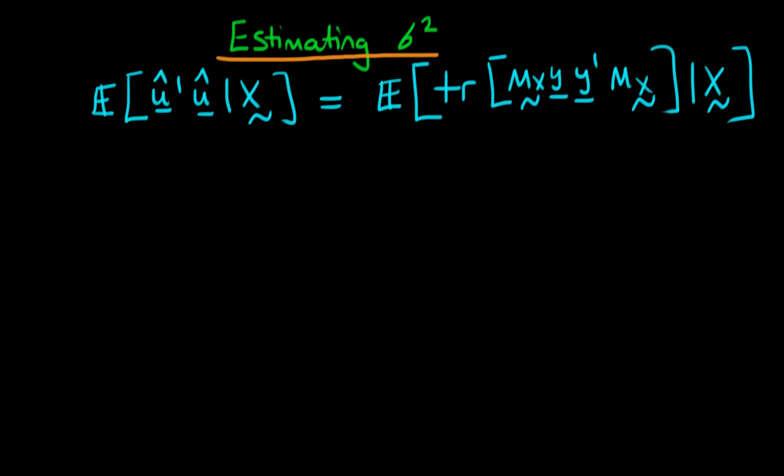In this video we are continuing our derivation of an unbiased estimator of sigma squared, and this is where we got up to at the last video. So we proved that the left hand side was equal to this right hand side.